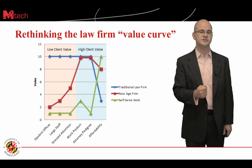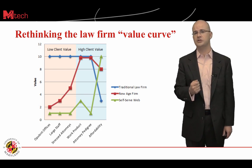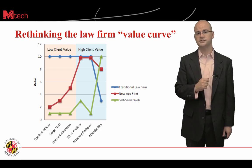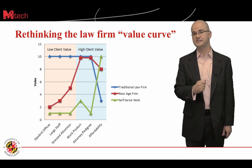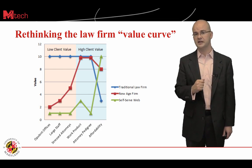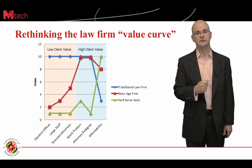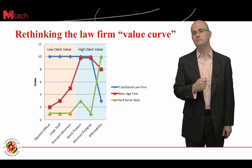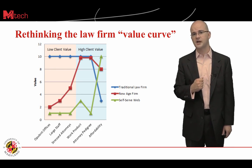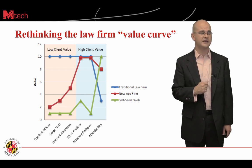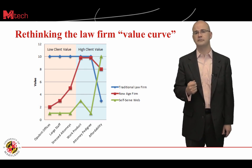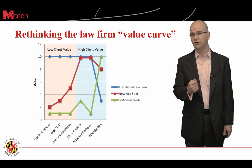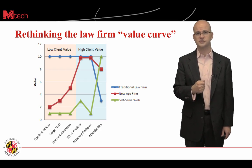In between those two is the red line — what a new age law firm may be. A new age law firm that perhaps blends some element of self-service with traditional, some element of automated versus human, and may fall somewhere in the middle. There may be an opportunity to still have an office, have a team, and deliver high work product under attorney direction and supervision, but at a more affordable cost because they've scaled back on some of the high expense items.